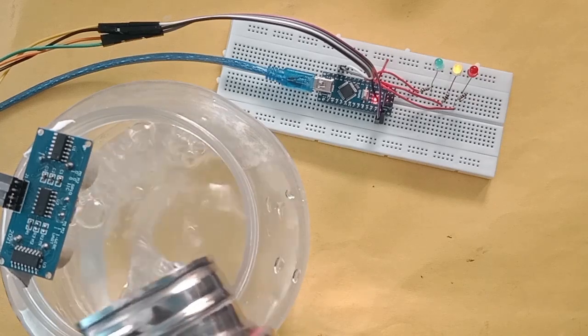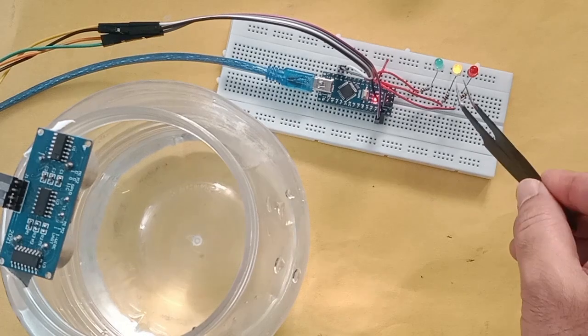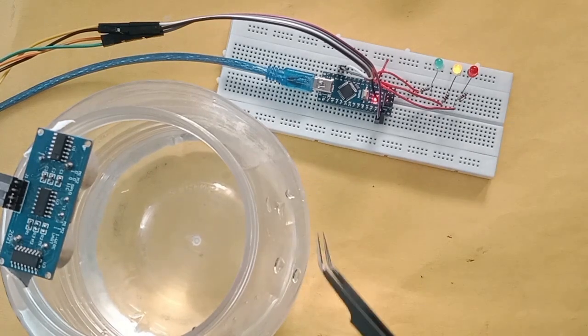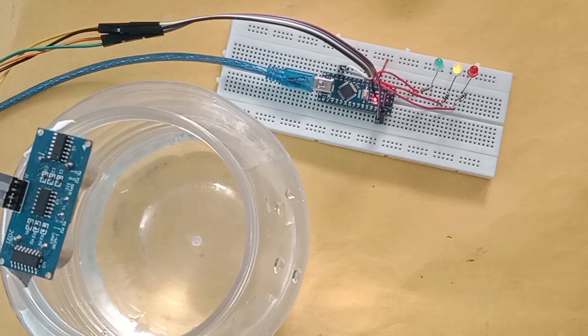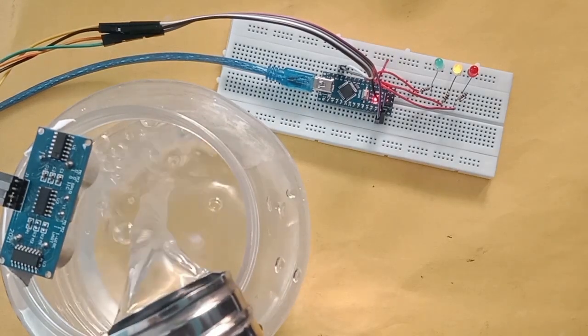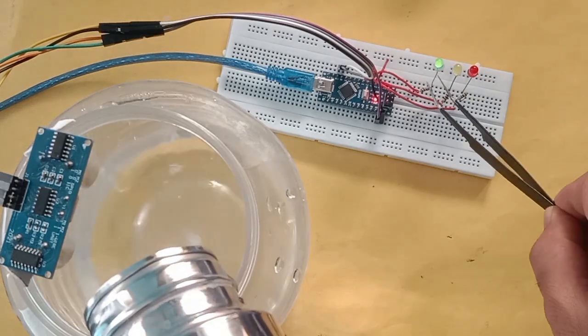Now yellow LED is glowing. It's time to put more and more water. If it reaches above 70 percent, like I said in the beginning of the video, green LED will glow. This is a very good project and simple as well.